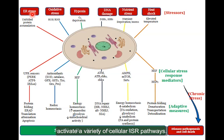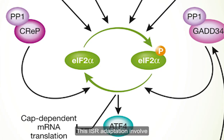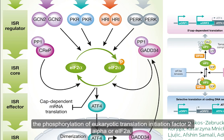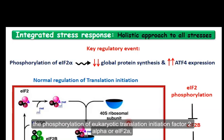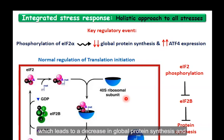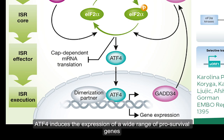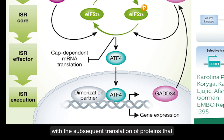This ISR adaptation involves the phosphorylation of eukaryotic translation initiation factor 2 alpha, or EIF2α, which leads to a decrease in global protein synthesis and the induction of selected gene expression, including activation transcription factor 4, or ATF4. ATF4 induces the expression of a wide range of pro-survival genes with the subsequent translation of proteins involved in autophagy, mitophagy, apoptosis, oxidative stress, and amino acid synthesis.